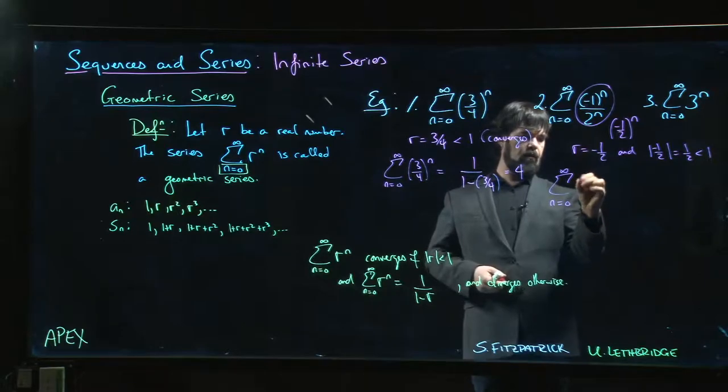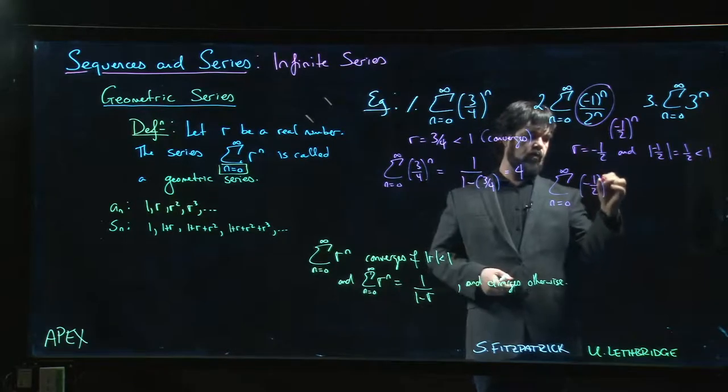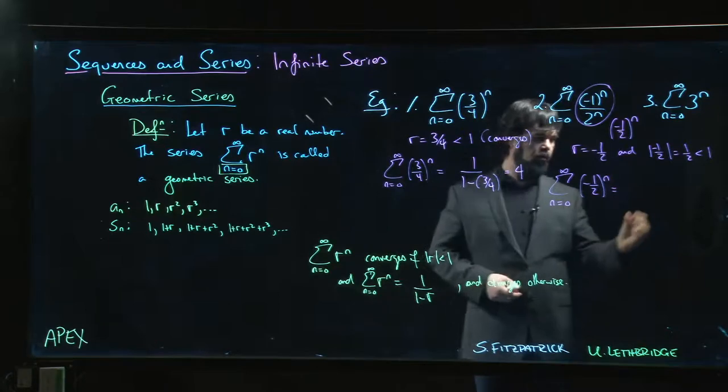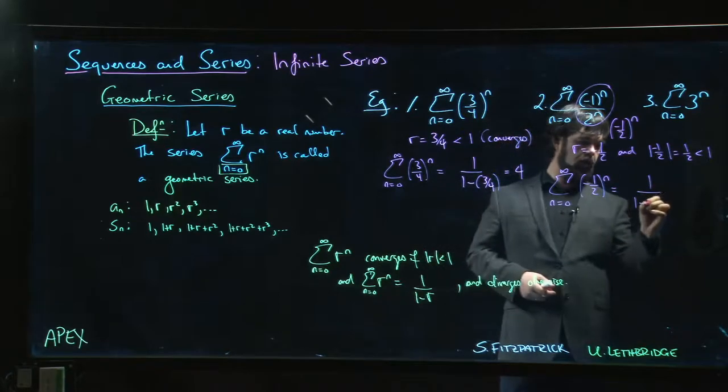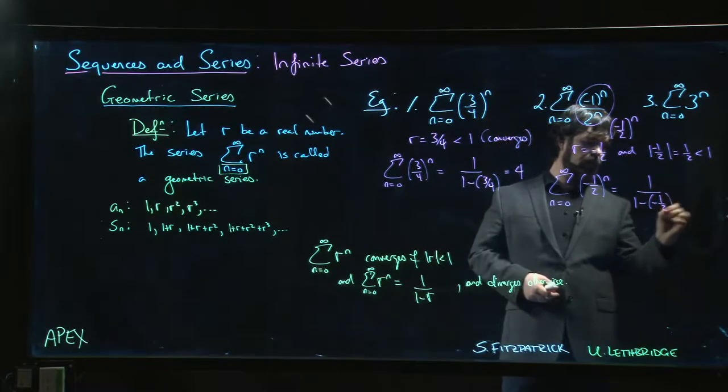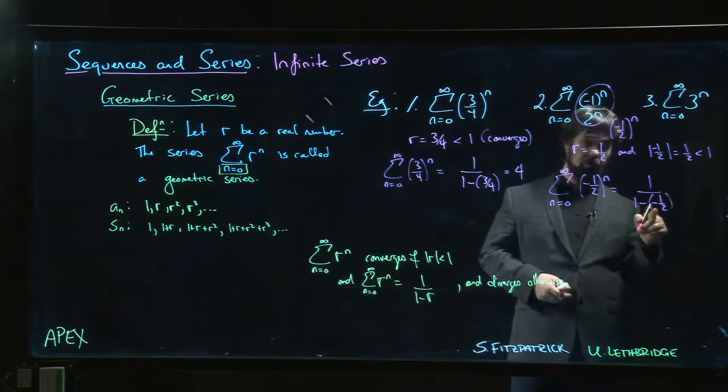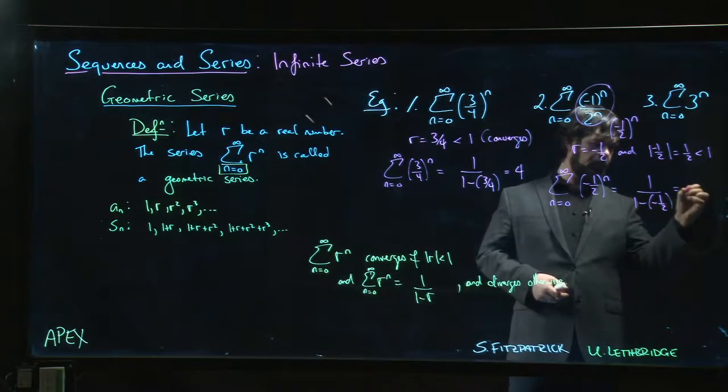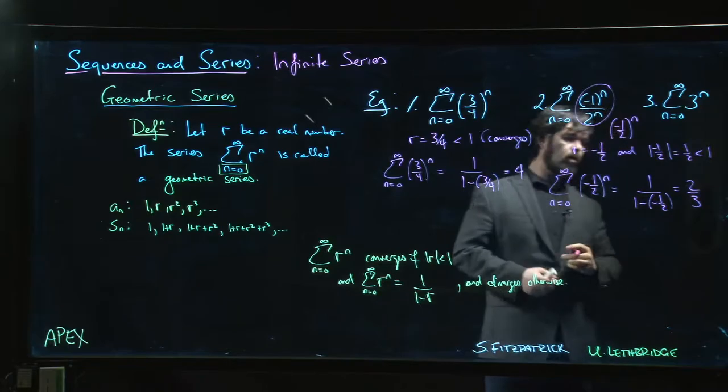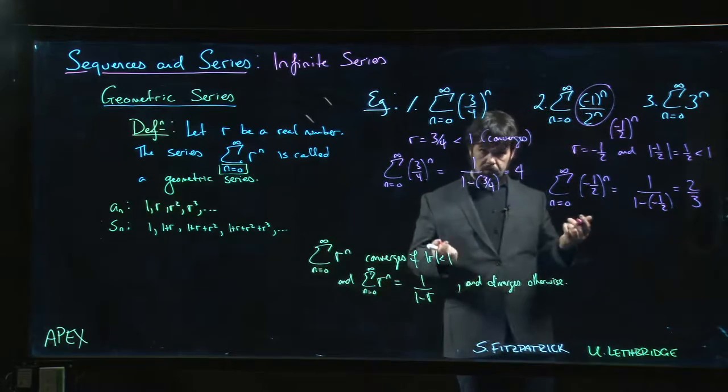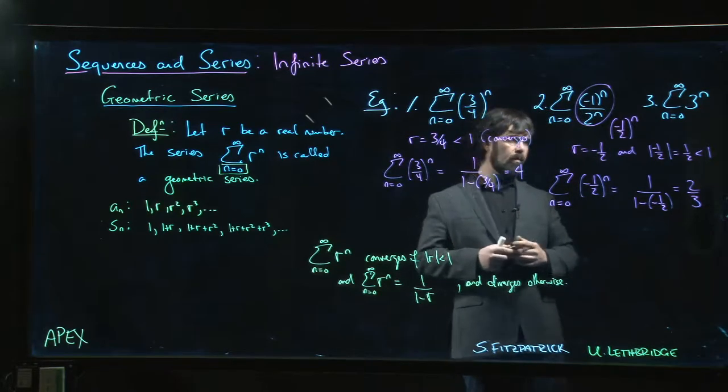And what is the sum going from zero to infinity of minus one half to the n? It's going to be one over one minus minus one half, which is one plus one half. So one over three halves, take the reciprocal, we get two thirds.